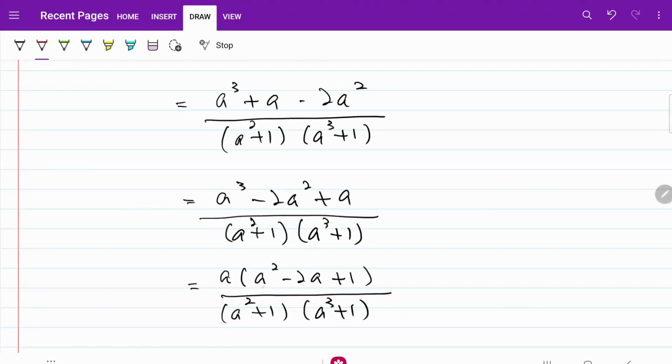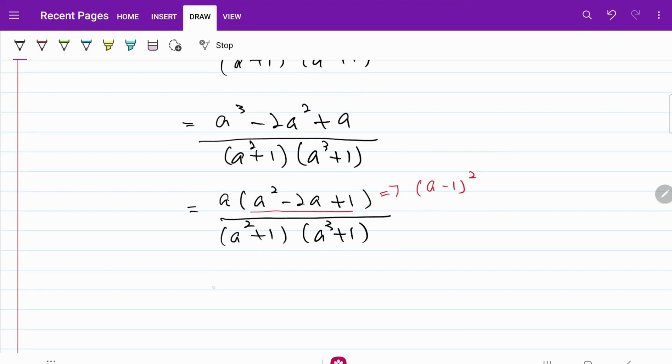At this point, if you look at this part on the numerator, you realize that it can conveniently be factorized to a minus 1 squared. So let's go ahead and use that.